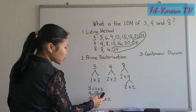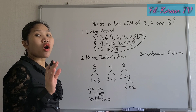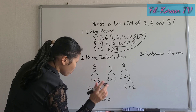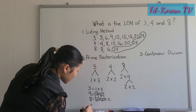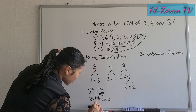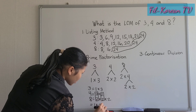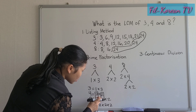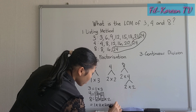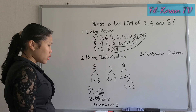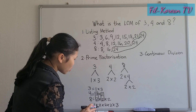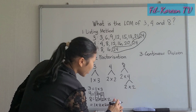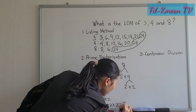Each pair is counted as 1, so we will multiply all the prime factors. We have: 1 times 2 times 2 times 2 times 2 times 3. Solving step by step: 1 times 2 is 2; 2 times 2 is 4; 4 times 2 is 8; 8 times 3 equals 24. So the LCM of 3, 4, and 8 is 24.